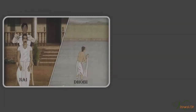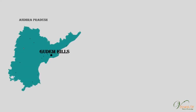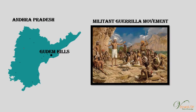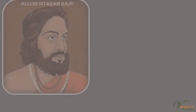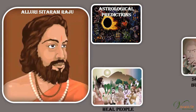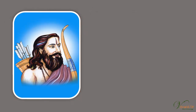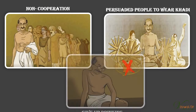In many places, nai-dhobi bans were organised by panchayats to deprive landlords of the services of even barbers and washermen. In the Gudem hills of Andhra Pradesh, a militant guerrilla movement spread in the early 1920s — not a form of struggle that the Congress could approve. Alluri Sitaram Raju claimed special powers, and the rebels proclaimed he was an incarnation of God. He talked of the greatness of Mahatma Gandhi, said he was inspired by the non-cooperation movement, and persuaded people to wear khadi and give up drinking.